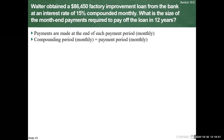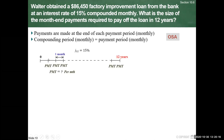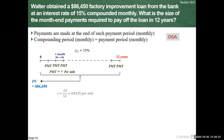Let's solve the problem. Payments are made at month end, so this is ordinary. The compounding period is 15% monthly, and payment periods are monthly — so we have an ordinary simple annuity. Our timeline shows payments at month end, with an unknown monthly payment, monthly nominal rate given, and a term of 12 years. We need to bring those payments back to today because we received a loan of $86,450. Since it's a simple annuity, we take the nominal rate of 15% and divide by 12, giving 0.0125 per month as our periodic rate.